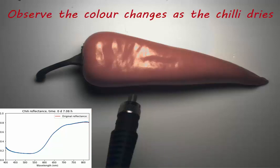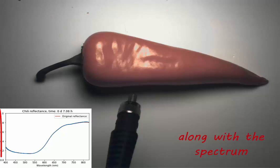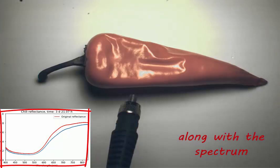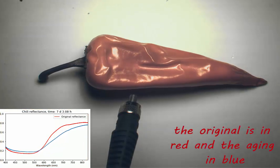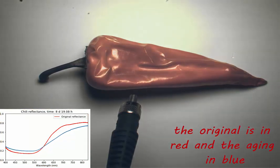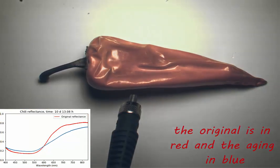See how the colour of the chilli changes as time passes. This is seen in the spectrum by showing which wavelengths of the illumination are reflected back and which are absorbed. The original spectrum is shown in red and the ageing spectrum in blue.